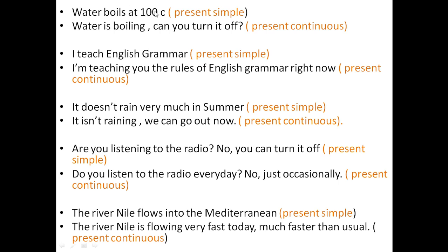'Water boils at 100 degrees' — present simple. 'Water is boiling — can you turn it off?' — present continuous. The first one means I'm talking about a scientific fact — something always true — so I use the present simple. The second is an action: 'water is boiling' means now the water is boiling. Similarly: 'It doesn't rain very much in summer' — a fact, present simple. 'It isn't raining' — an action, present continuous.